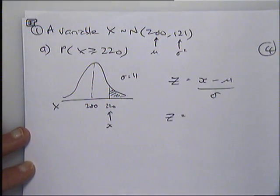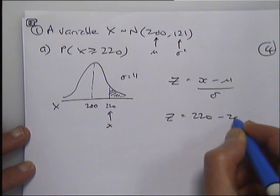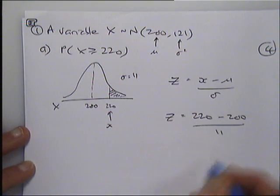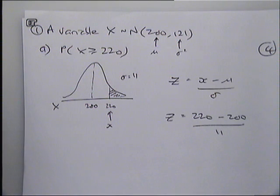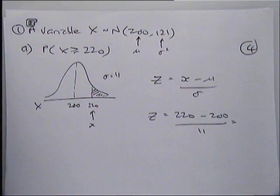So what is Z going to be here? If that is a little value of X, the 220, Z is going to be 220 minus the mean over the standard deviation. You need calculators for these because you're going to get decimals cropping up all the time.